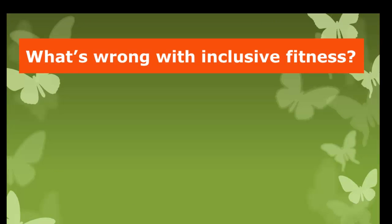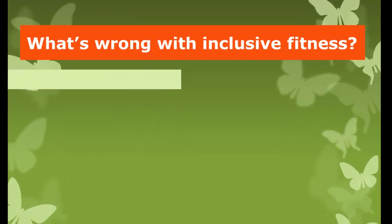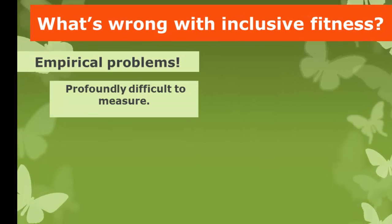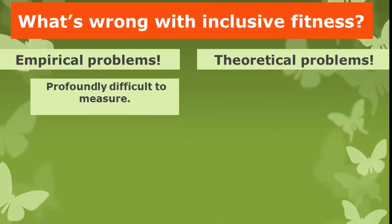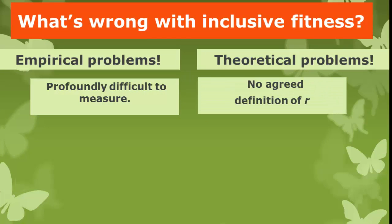So what could be wrong with Hamilton's Rule and inclusive fitness? Wilson points to empirical problems — it's a profoundly difficult rule to measure in practice. Martin Nowak, among other mathematicians, has argued it has theoretical problems as well, because different biologists apply different definitions of R, or relatedness. You can use genealogy or a pedigree, compare whole genomes via a regression line, or focus on organisms sharing a particular allele while ignoring genealogical relatedness entirely. Others have pointed to this ambiguity in how R is measured.